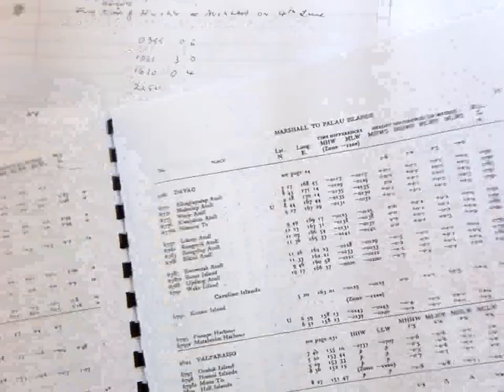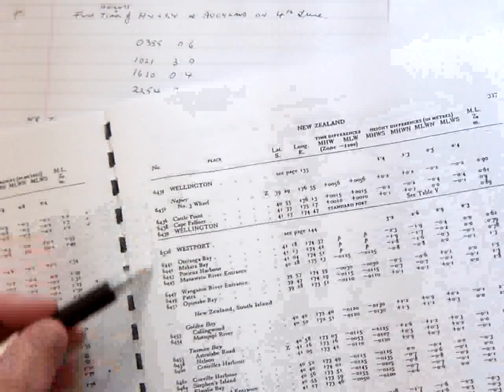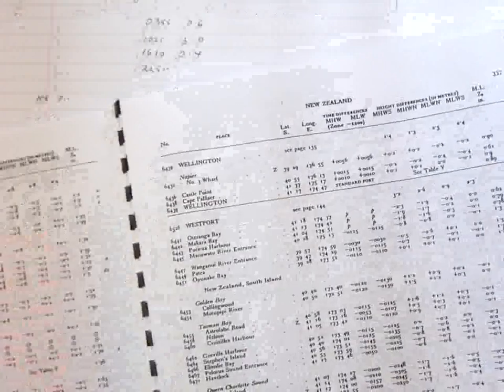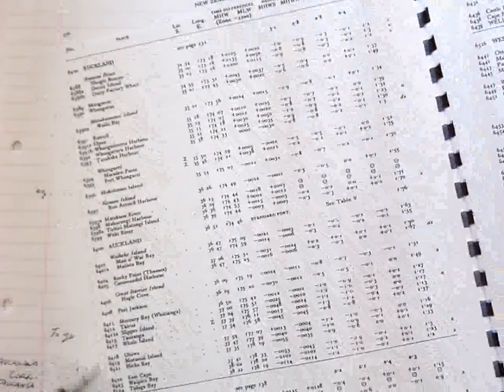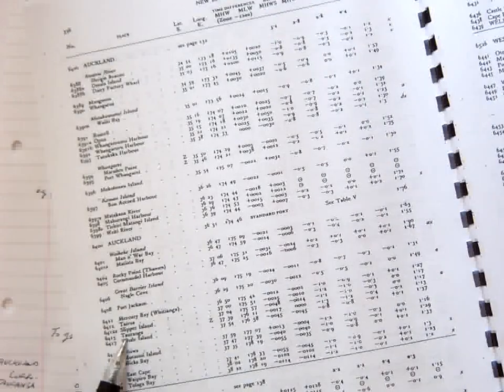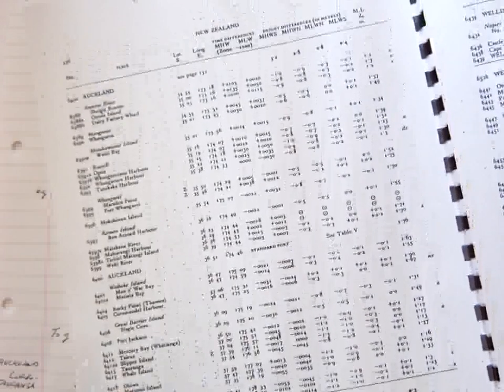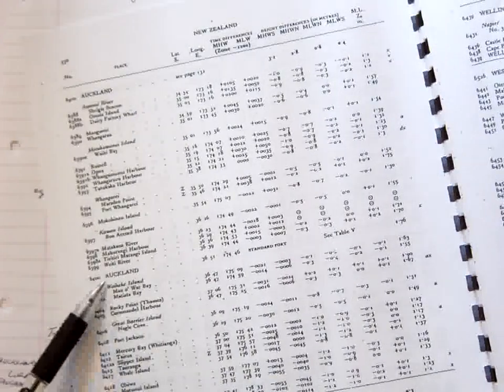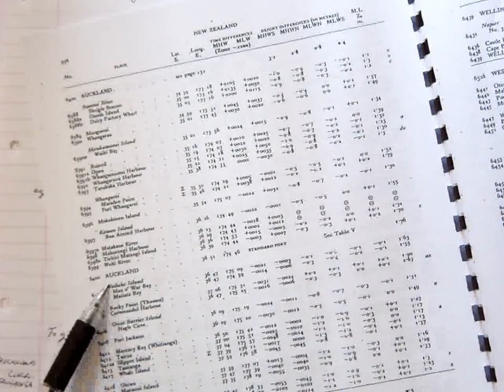So the first thing we do, we go into the tables at the back and we look along so we can find 6415. And we can see it's 6415, there we find Turanga. And if we look up the page, we can see for Turanga, Auckland is the standard port. So Turanga is the secondary port in the Pacific, Auckland is the standard port.